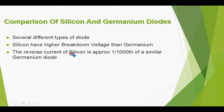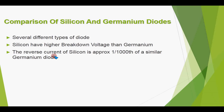The reverse current of silicon is approximately one-thousandth of that of a similar germanium diode. This is a very important characteristic — silicon has much less reverse current compared to germanium. So when we need to minimize reverse current, we will preferably use the silicon diode.